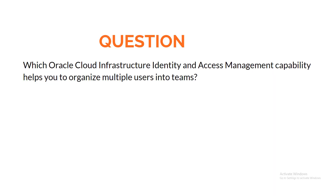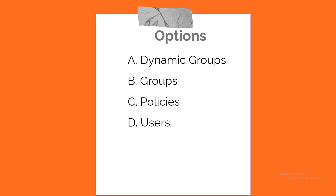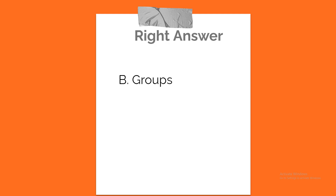Question. Which Oracle Cloud Infrastructure Identity and Access Management capability helps you to organize multiple users into teams? A. Dynamic Groups. B. Groups. C. Policies. D. Users. Correct answer: B. Groups.